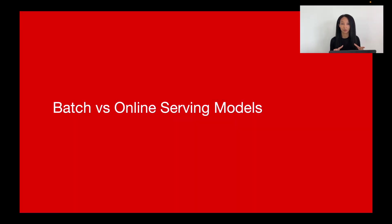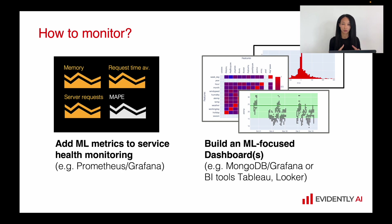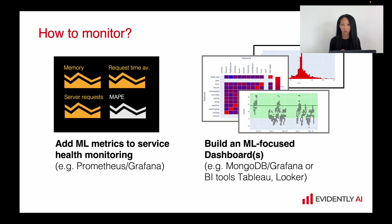Now let's move to the architecture discussion — batch and online serving models — because how we deploy a model influences how we implement monitoring. If you already have production services deployed in your company, you probably have some monitoring implemented already, and you could reuse that existing architecture for your machine learning model. For example, if you have services monitored by tools like Prometheus, which pulls metrics from your production service, and Grafana, which uses Prometheus as a data source to visualize metrics and set alerts.